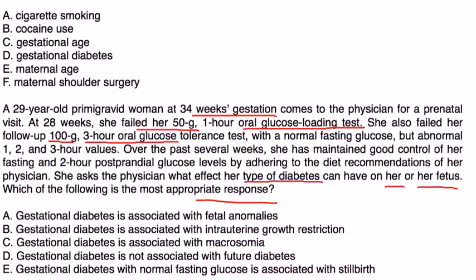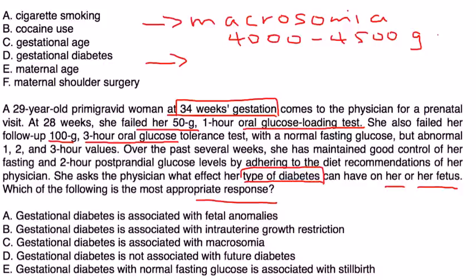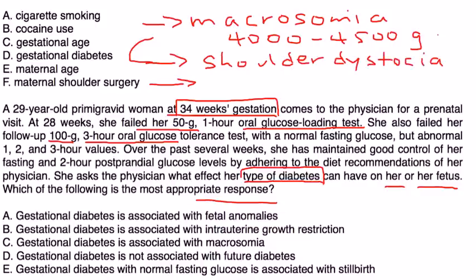She basically wants to know: she has gestational diabetes — what is that going to do to her and her fetus? Well, there are two or three big things. The first is that the baby can have fetal macrosomia, defined as a large baby in the 4,000 to 4,500 gram weight range. The second is that macrosomia can lead to a complication known as shoulder dystocia because of the baby being so large, which can occur during vaginal delivery.